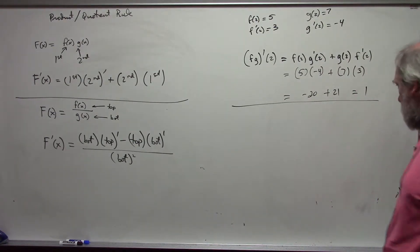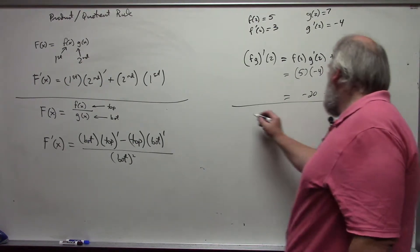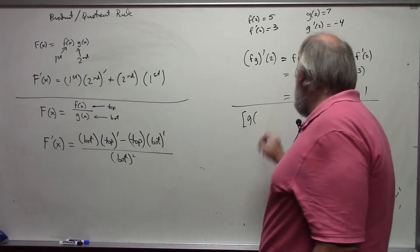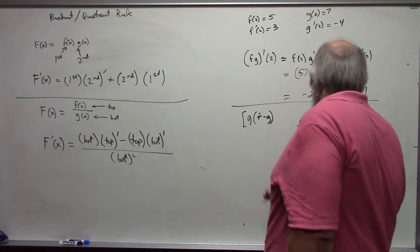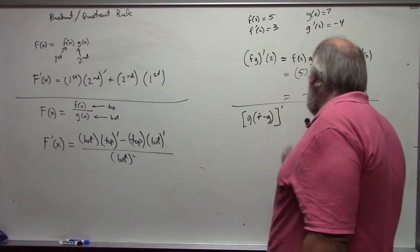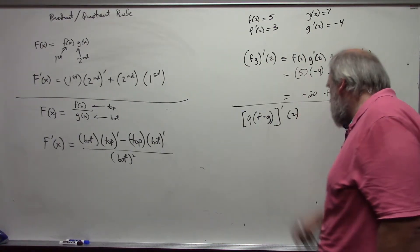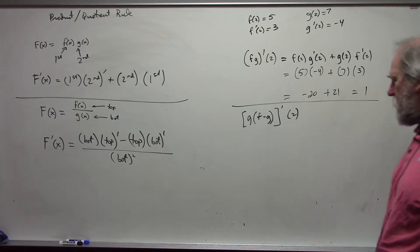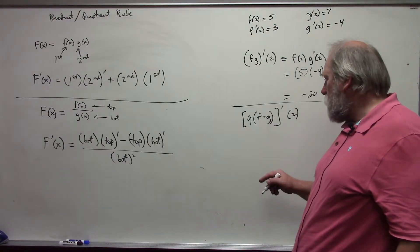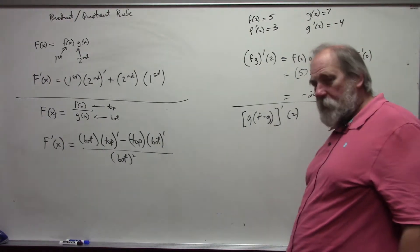Let's make this a little bit more interesting. Suppose I have g times f minus g, the derivative of all that at 2. Okay, and so in this case, we can do this in steps.